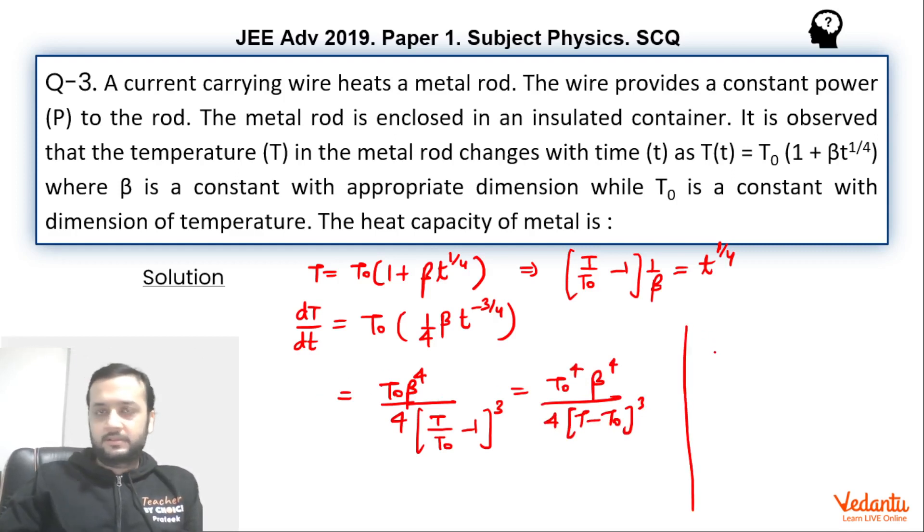Now it is pretty simple. We can say that the rate of transfer of heat can be written as heat capacity into rate of change of temperature. dQ/dt is nothing but C into dT/dt. So from here we can say that C value will be power upon dT/dt.